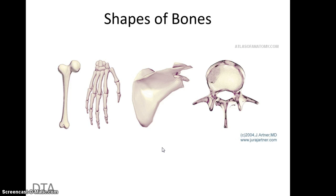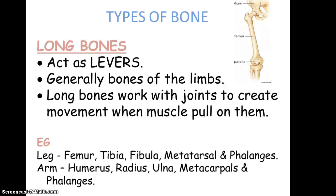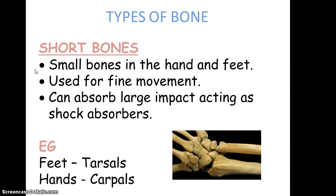Moving on to the shapes of bones — there are different types. Long bones always act as levers and work with joints to create movement; examples are shown on screen, so pause the screencast if you need to review these. Short bones are usually found in the hands and feet and are used for finer movements. They can also absorb large impact and act as shock absorbers.